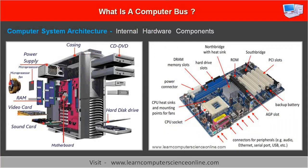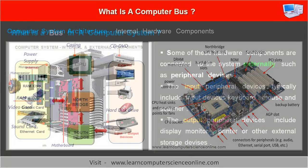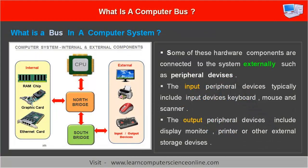A computer system consists of a number of hardware components. Some components are internal to the system. These internal components are mounted inside the computer casing. The internal hardware components include the central processing unit (CPU), main memory RAM, hard disk, graphics card, and the computer motherboard.